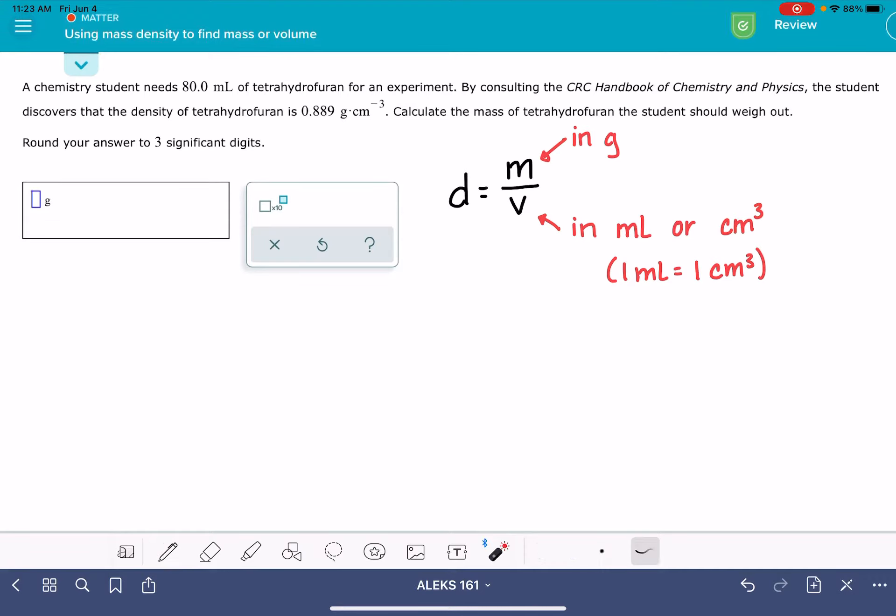For this problem, you are going to be given the density of an object, and then you'll also be given either the mass or the volume and asked to calculate the other variable. So you may want to begin by rewriting your density equation to help you isolate the variable that you're trying to solve for.